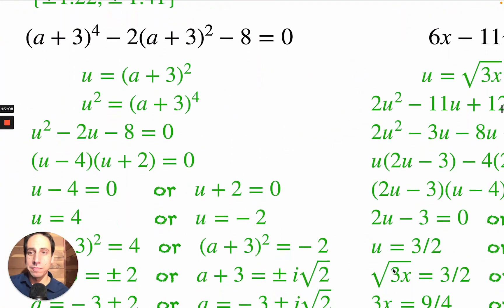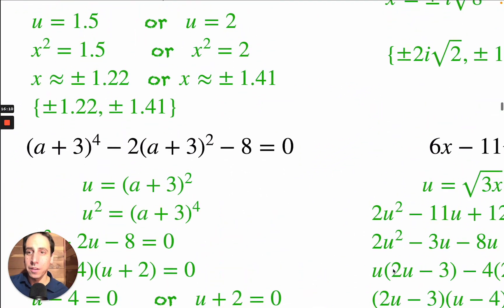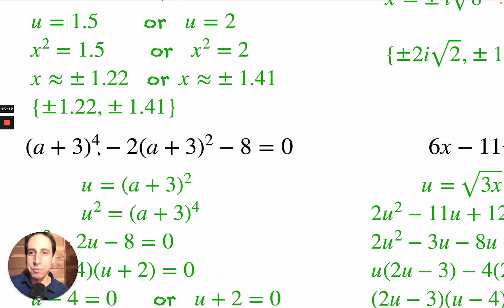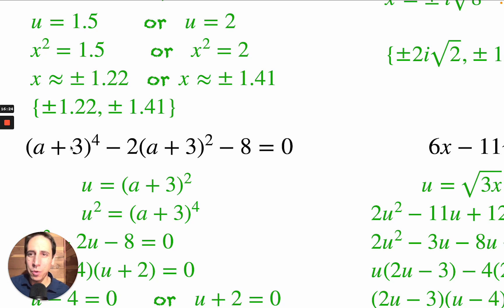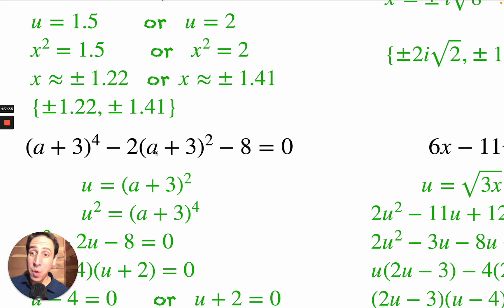We've got a lot going on here — a set of parentheses, a raise to the fourth power, and a square root. One thing you could do is multiply out (a plus 3) four times using box methods and then combine all the terms. But actually, u-substitution is going to be way simpler. I've noticed that this exponent is double the other, and it's a trinomial.